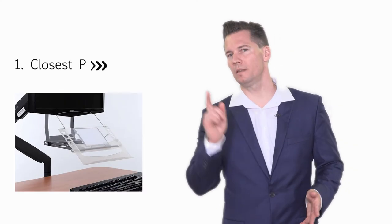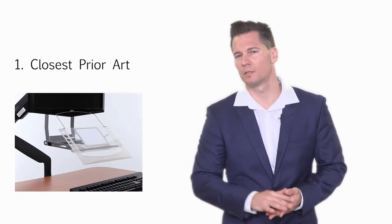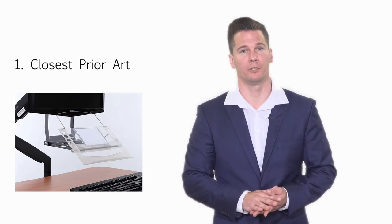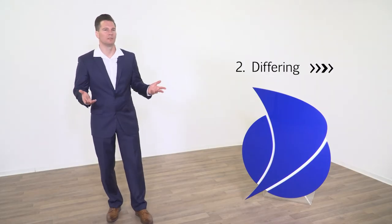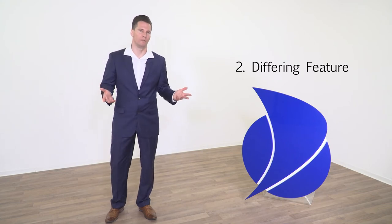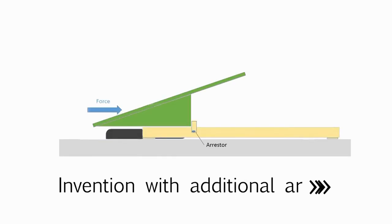The examiner says that this is the closest prior art. So let's accept this opinion and look for the differing feature. This is quite simple since we just established novelty over the prior art. It differs by having an arrester.